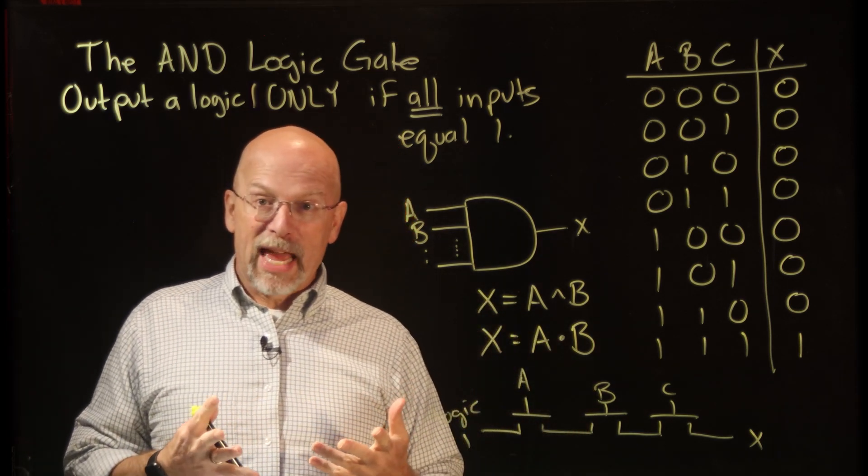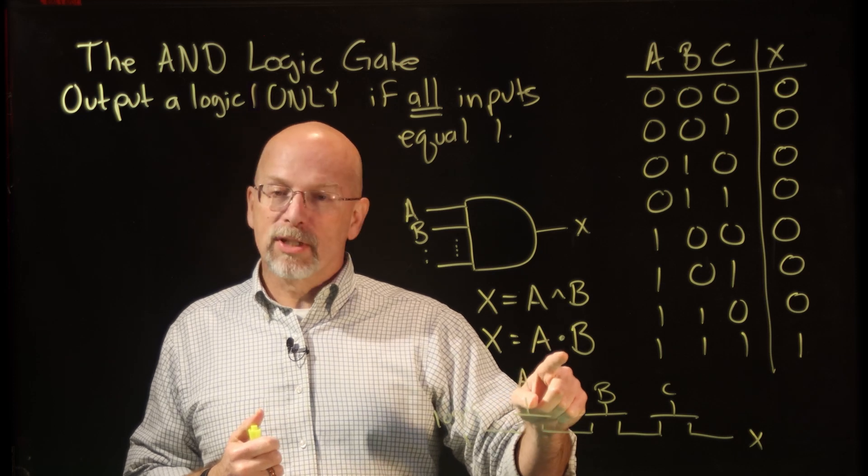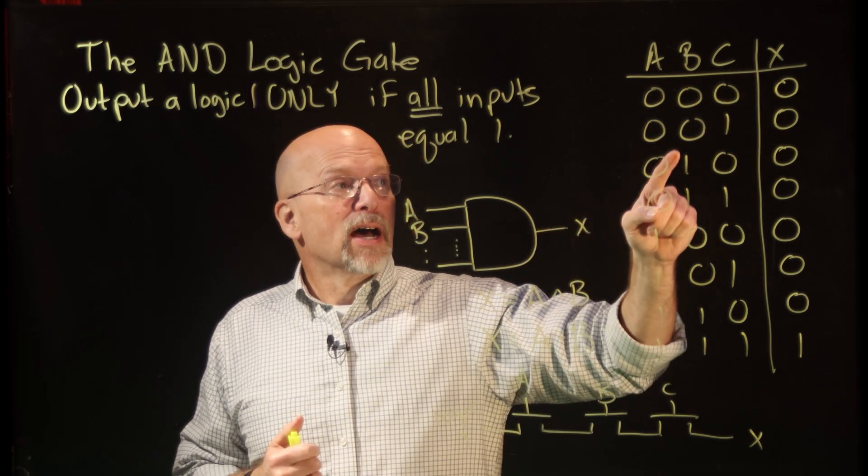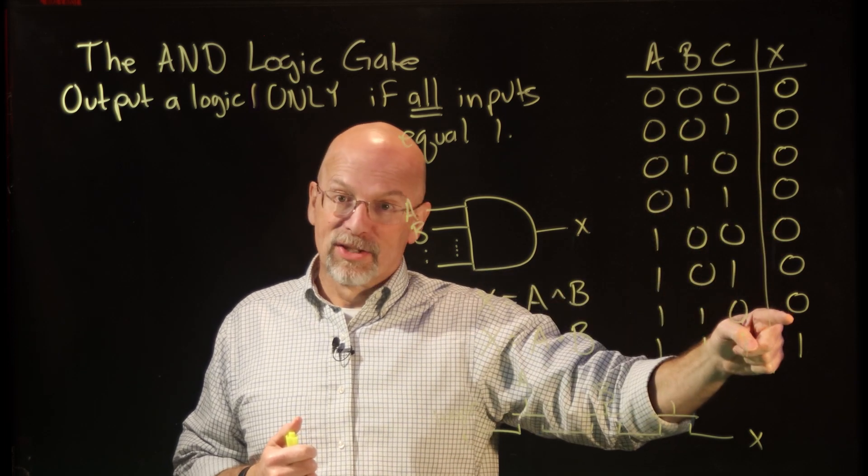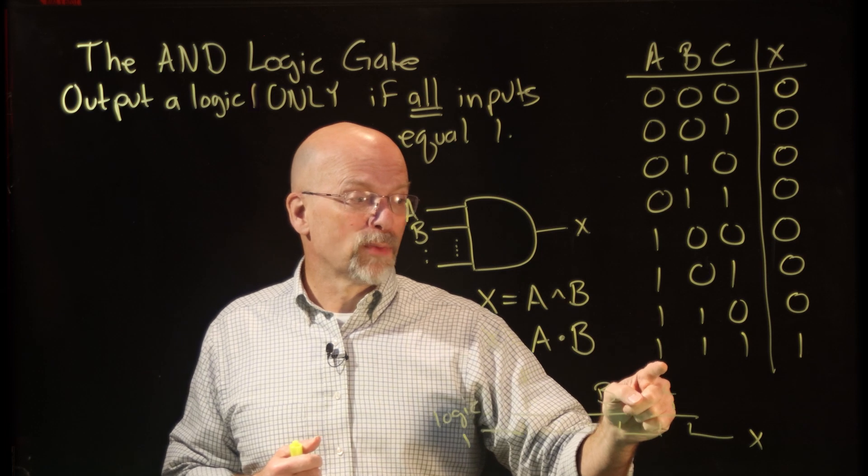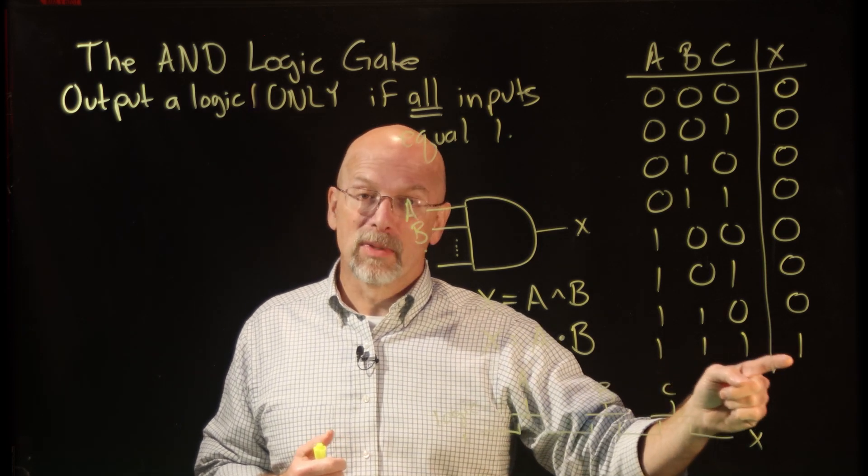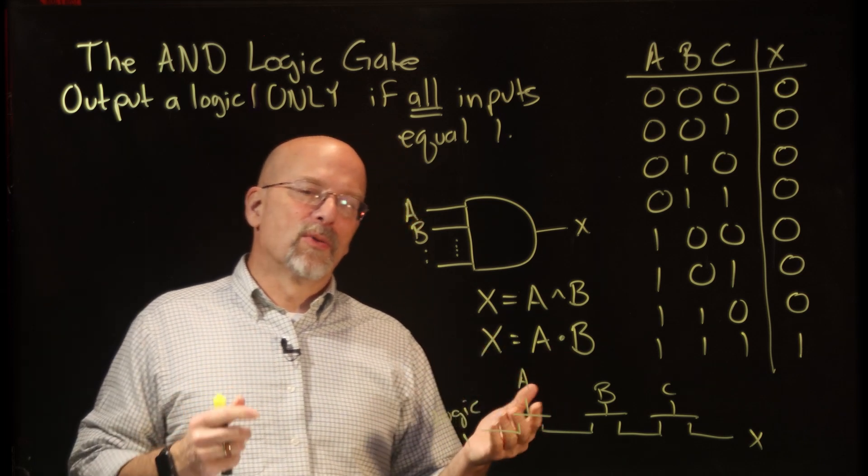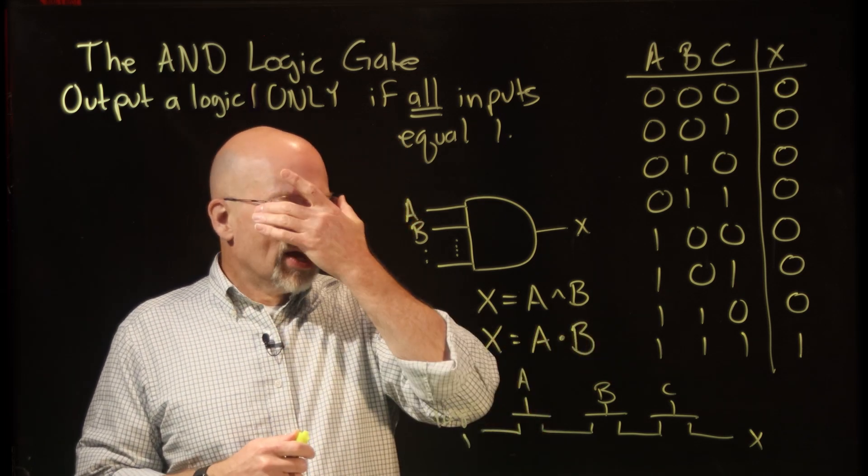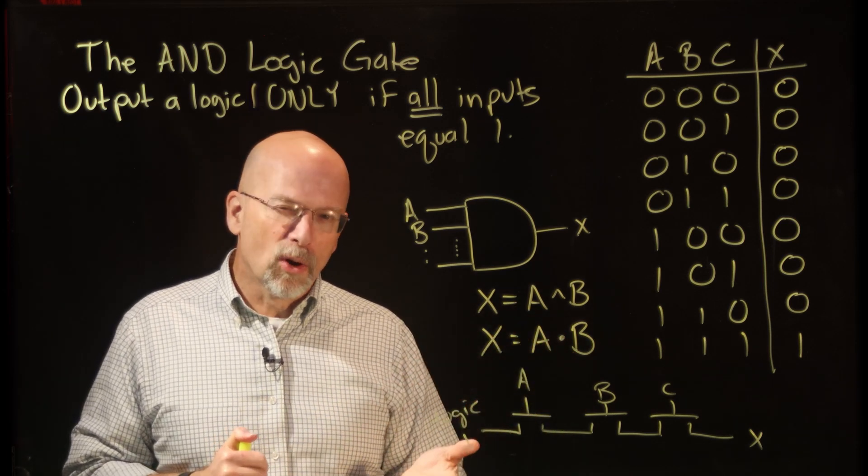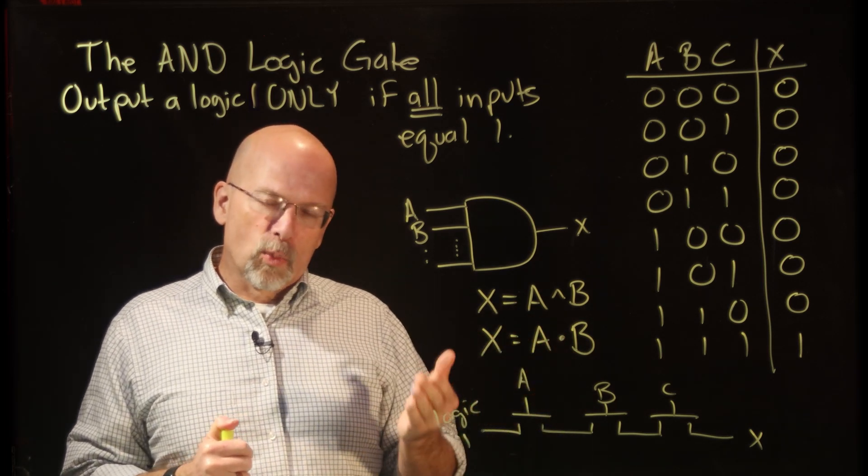Now mathematically this may not make 100% sense if you think of this as multiplication. Well, 0 times 0 is 0, 0 times anything is 0. The only time that we get a 1 output is if we have 1 times 1 times 1 times 1 equals 1. All ones is equal to 1. Multiply all the ones together and equal 1.